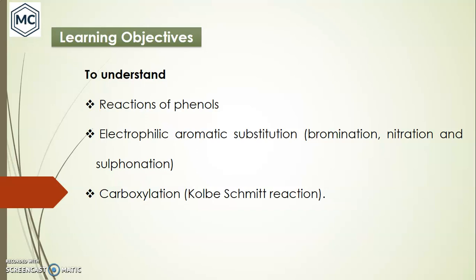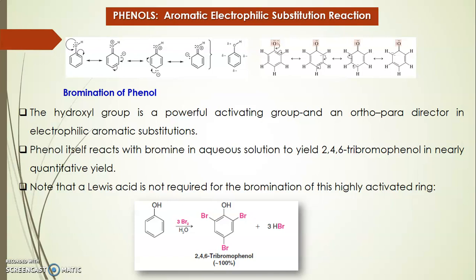And carboxylation, that is the Kolbe-Schmitt reaction. Coming to the aromatic electrophilic substitution reaction, if you consider the resonance structure of phenol, you can see that the negative charge is located at the ortho and para positions of the benzene ring. In the resonance structure of phenoxide, the negative charge is also located at the ortho and para positions, so those positions are more nucleophilic compared to the meta position. Therefore, the hydroxyl group is a powerful activating group and an ortho-para director in electrophilic aromatic substitution reactions.